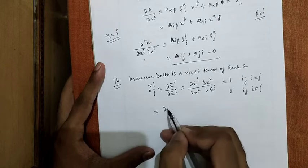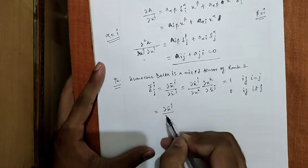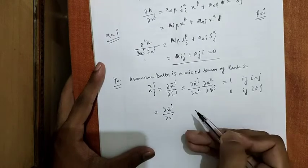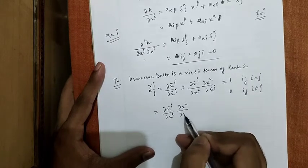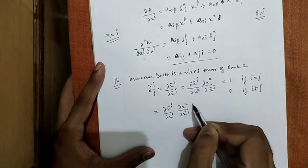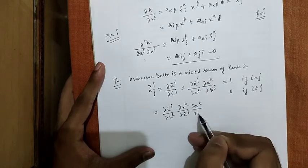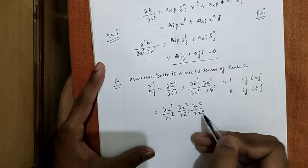Now, again using the chain rule, curl x_bar i over curl x_j equals curl x_bar i over curl x_k, curl x_k over curl x_j.